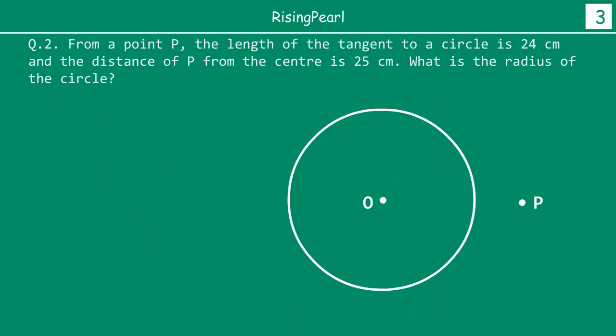Let's take a look at one more question. From a point P, the length of the tangent to a circle is 24 cm and the distance of point P from the center is 25 cm. What is the radius of the circle? In this question, no diagram is given, so you have to understand what the question is telling us before you start solving. If you get your diagram wrong in questions where diagrams are not given, you want to make sure you read the question thoroughly and draw the appropriate diagram.